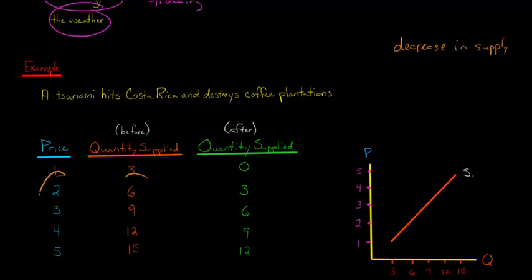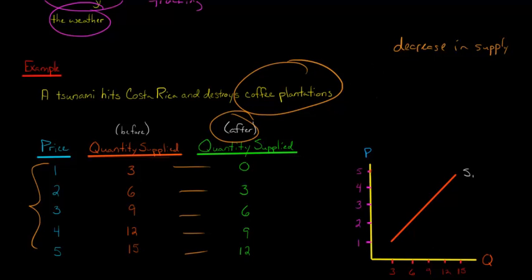And at a price of two dollars a pound, before they were willing to supply six million pounds of coffee. And now they're only willing to supply three million. So you see, at each price, the amount that they're willing to supply has decreased. It has decreased after we've had this decrease in supply, that these coffee plantations have been wiped out.